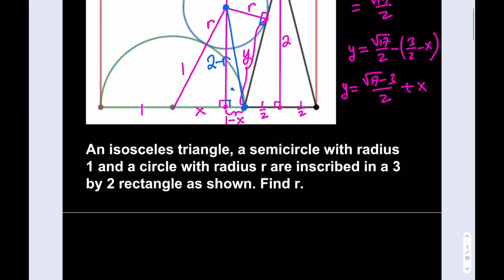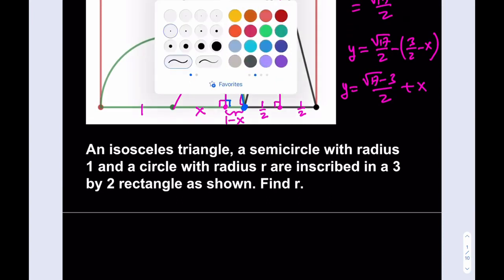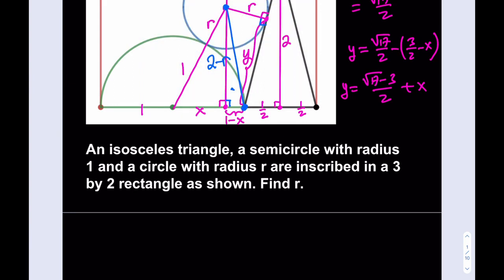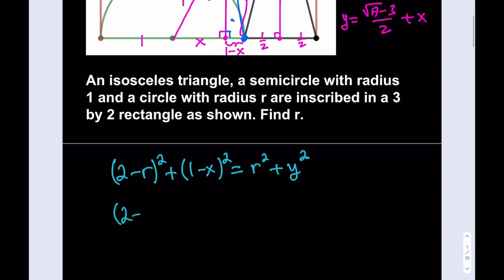So, you got everything you need. Let's go ahead and write down our equation. So, what I'm trying to say is the hypotenuse 2 minus r squared plus 1 minus x squared, which is hypotenuse squared, is equal to r squared plus y squared. Beautiful. But I know the value of y. So, let me go ahead and substitute that. So, this gives me 2 minus r squared plus 1 minus x quantity squared equals r squared plus y squared, which can be written as square root of 17 minus 3 over 2 plus x squared. Awesome. But notice that this is just one equation, but we have two variables. You can expand it, you can do anything, but you can't solve for r and x separately. So, you do need another equation.